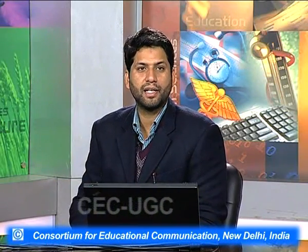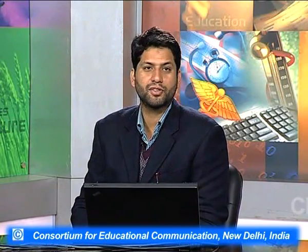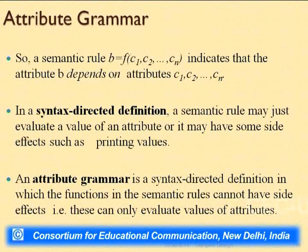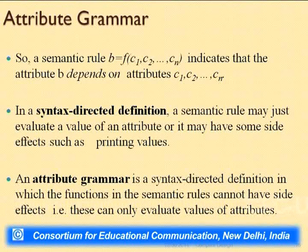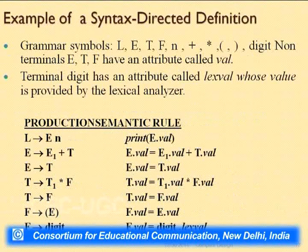A dependency graph is very helpful when inherited attributes exist — it suggests the possible evaluation order of an annotated parse tree. A semantic rule of the type b = f(c1, ..., cn) indicates that attribute b depends on attributes c1 through cn. In a syntax-directed definition, a semantic rule may evaluate a value or have side effects such as printing. An attribute grammar is a syntax-directed definition in which the functions in the semantic rules cannot have side effects — they only tell what the values of the attributes will be.